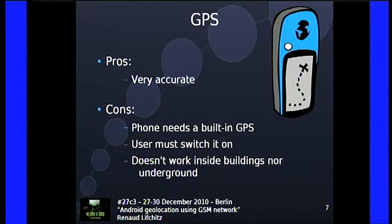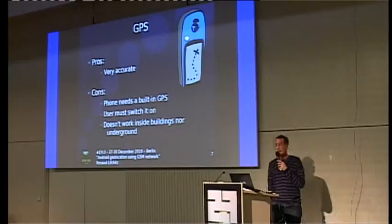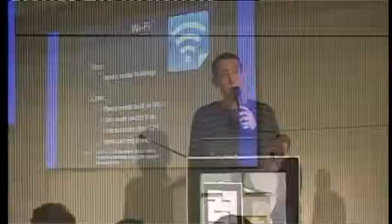GPS is very accurate — you can have three or four meter precision. But the problem is you need a GPS in your phone, which is not the case for all phones. The user must switch it on; it's not enabled by default because of battery consumption. GPS also doesn't work inside buildings because you don't have satellite view, and not underground, for example in subways.